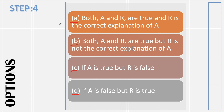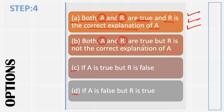Option A says: both A and R — यानि assertion और reason — are true and R is the correct explanation of A. ये वो criteria है जब तीनों टिक बन रहे हैं. Option B says: both A and R are true — assertion भी true है, reason भी true है — but R is not the correct explanation of A. जो third step है वो गलत है, तो ये वो वाला option है.